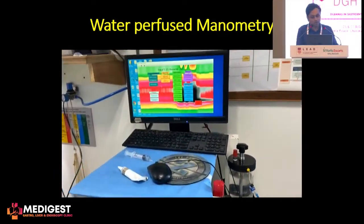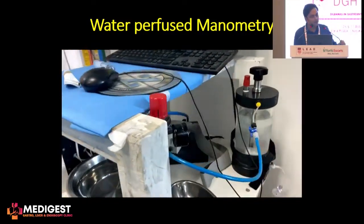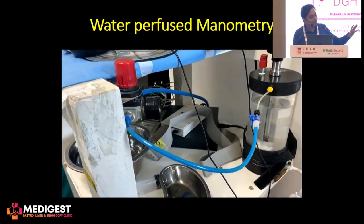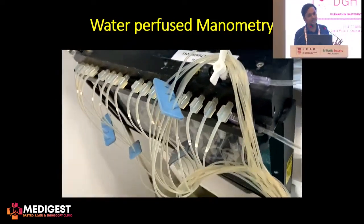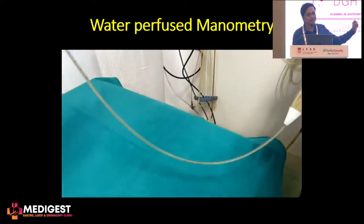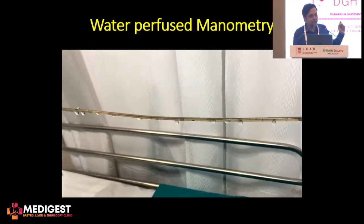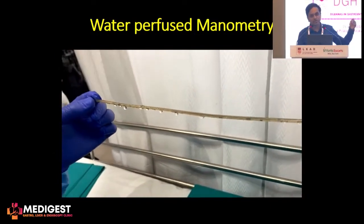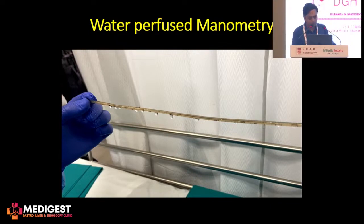In a water-perfused manometry system, every system has a chamber containing water which is propelled under approximately one atmosphere of pressure. This goes through an intricate set of capillaries, which are eventually connected to a single catheter through which water drips at a specific rate. Whatever pressure is offered to the flow of water in the area of interest is converted into colors, and those graphs are then evaluated in the manometry output.